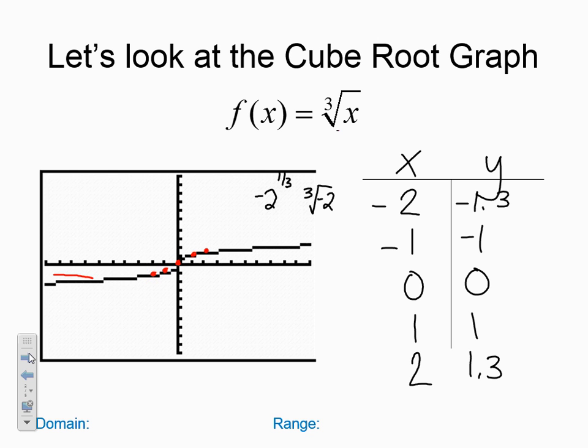It makes sort of a wave, if you will, okay? If I was going to describe what that looks like, it makes sort of a wave. Notice that it does have two sides and two arrows. It doesn't have a definite starting point like the square root graph. The square root graph had a start and went in one direction. The cube root graph is more that shape.